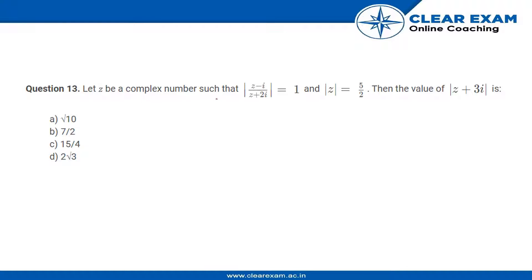We have the question: Let z be a complex number such that |z - i|/|z + 2i| = 1 and |z| = 5/2. Then the value of |z + 3i| we have to find.